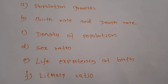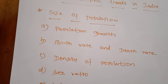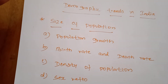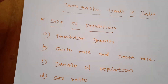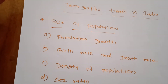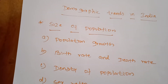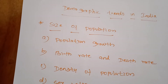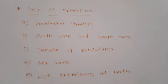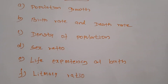The density of population refers to the average number of persons residing per square kilometer. It represents the man-land ratio. As the total land area remains the same, an increase in population causes the density of population to rise, meaning our available resources are utilized by an increasing number of people.